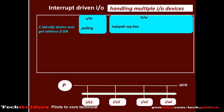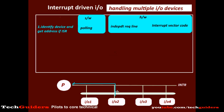The approach used is: when the processor receives an interrupt and wishes to service that request, it sends an acknowledgement signal. Upon receiving the acknowledgement signal, the device that raised the interrupt places a code called the interrupt vector code on the data bus, which points to the appropriate interrupt service routine to be executed. Hence, the device identifies itself to the processor using the interrupt vector code, and both the device and the corresponding interrupt service routine are identified.